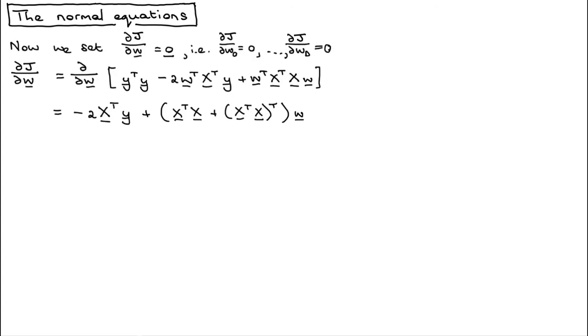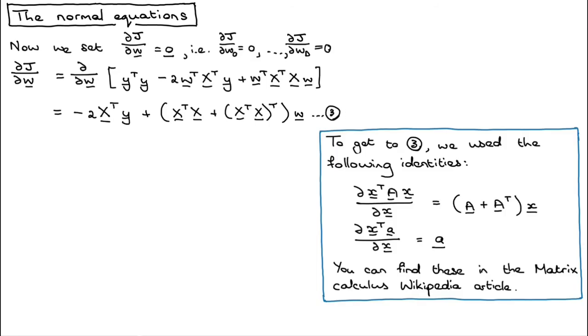How the fudge did I do that? I cheated. I went on Wikipedia and found my identities there. I specifically used these two identities that we actually also looked at in the vector and matrix derivatives video. That then leads to this result.